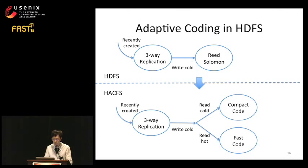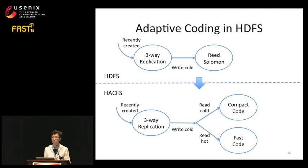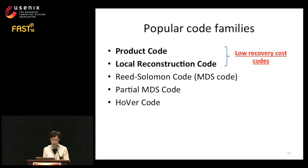We implement this idea and design HackFS—the Hadoop Adaptively Coded File System. For comparison, originally HDFS triplicates new files, and when files become read-cold, it uses an erasure code such as Reed-Solomon. In HackFS, we keep three-way replication for new files the same. When a file becomes read-cold, we sub-classify it into read-hot and read-cold, applying the fast code and compact code accordingly. We apply our adaptive coding to product codes and LRCs, both of which have very low recovery cost.